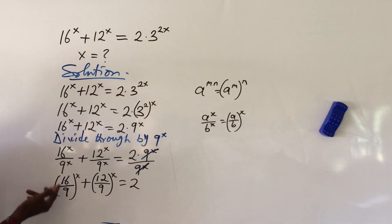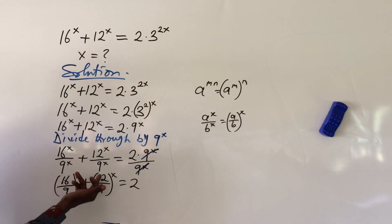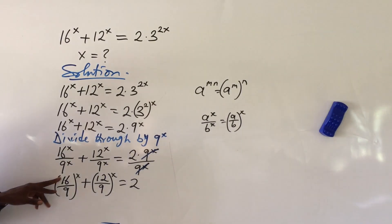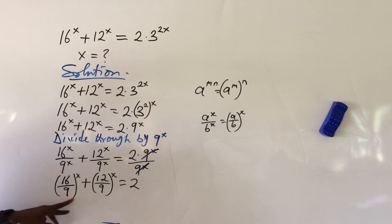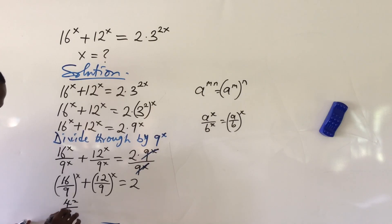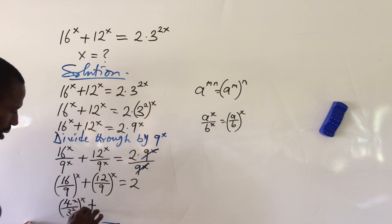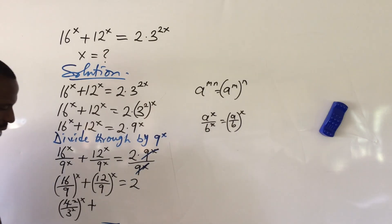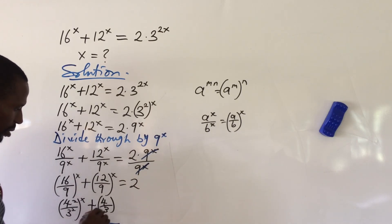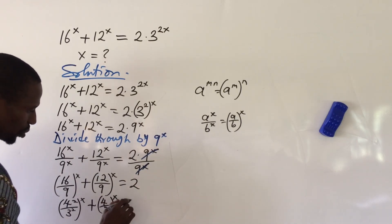Nothing can simplify 16 and 9 together, but 3 can go into both 12 and 9. Also, 16 and 9 are perfect squares. So we rewrite: 16 is (4)^2 and 9 is (3)^2, giving (4²/3²)^x. For the second term, 12/9 simplifies with 3 to give (4/3)^x. So we have (4/3)^(2x) plus (4/3)^x equal to 2.